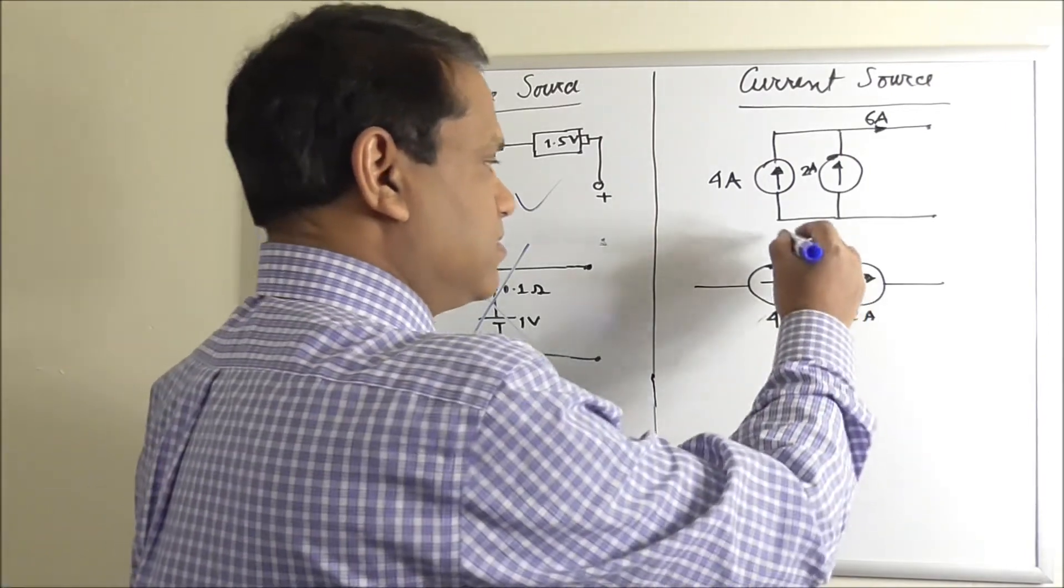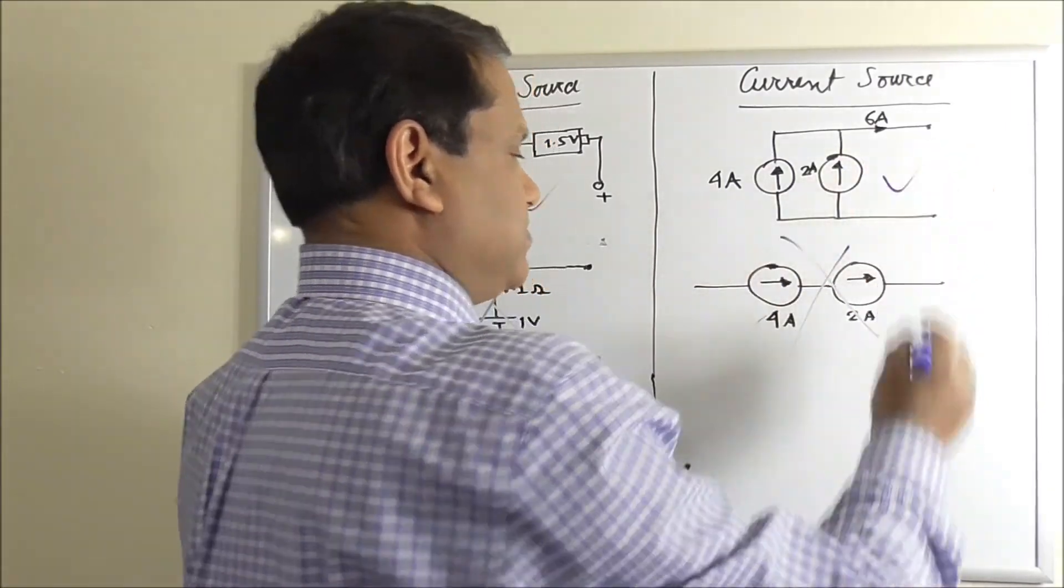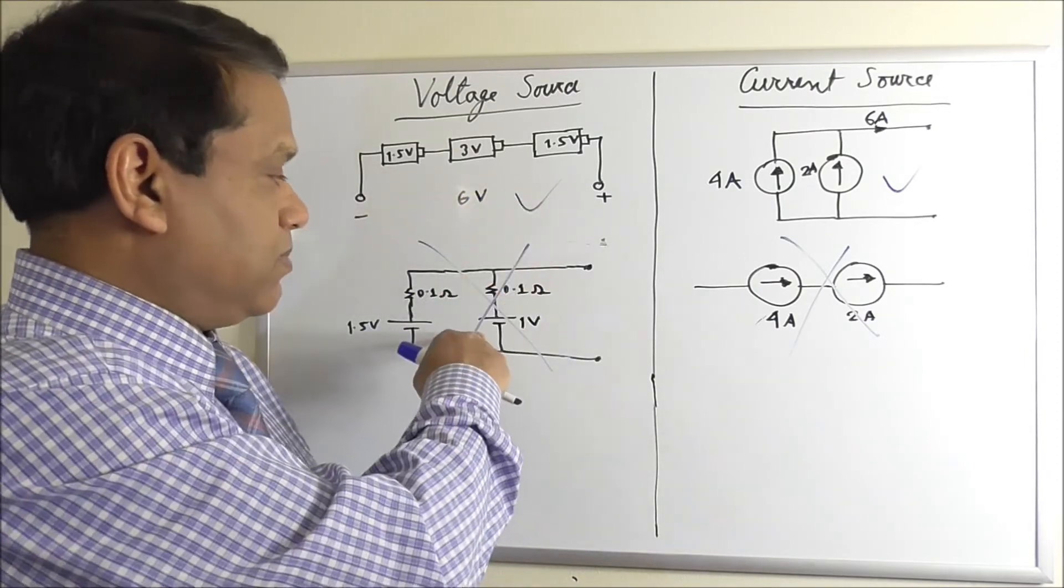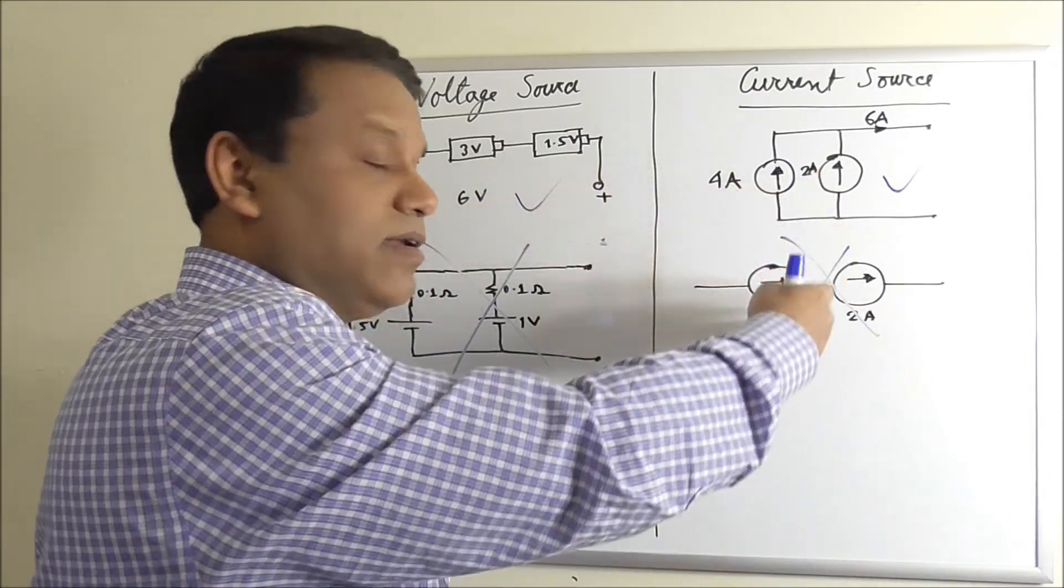So you should never do this. This is fine. So the lesson we learned here: voltage sources can be put in series but not in parallel, and current sources can be put in parallel but not in series.